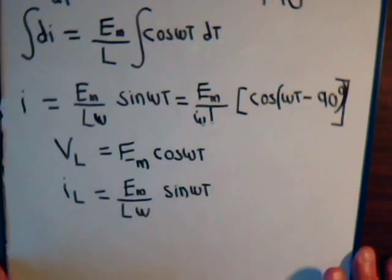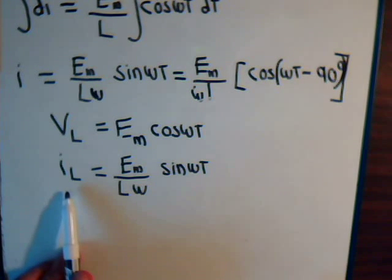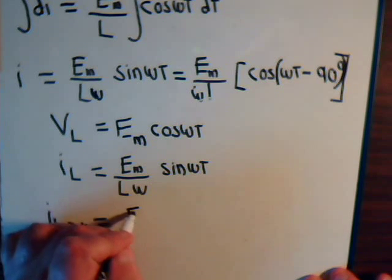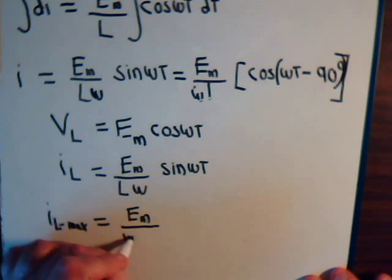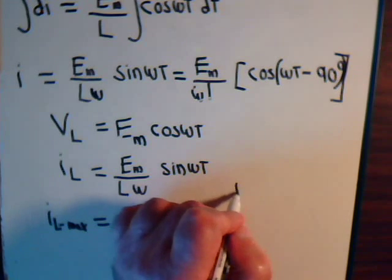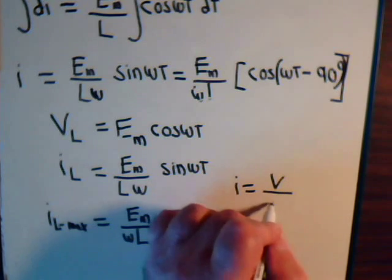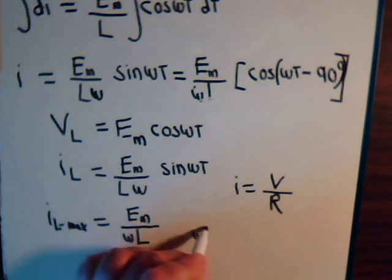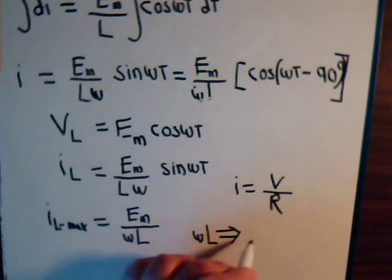Going back to the expression, the maximum current I_L_max is just the maximum voltage divided by omega times L. We're used to thinking of current as voltage divided by resistance, so for the inductor, the expression omega L plays the role of a resistance factor — and omega L is the inductive reactance.